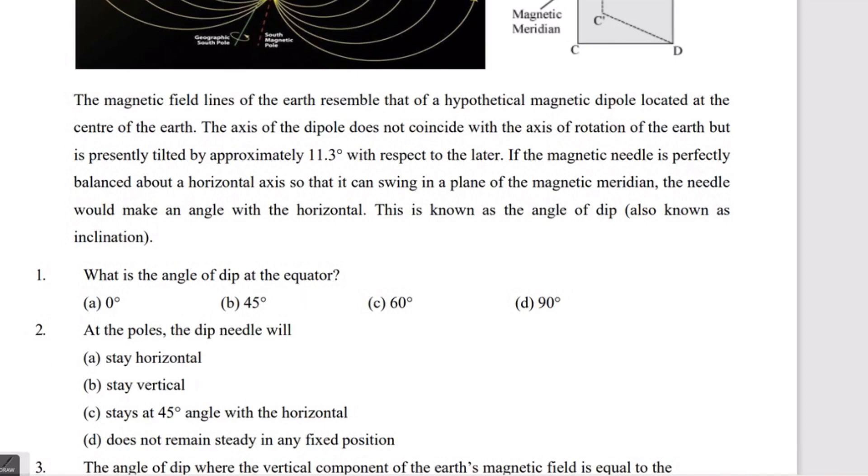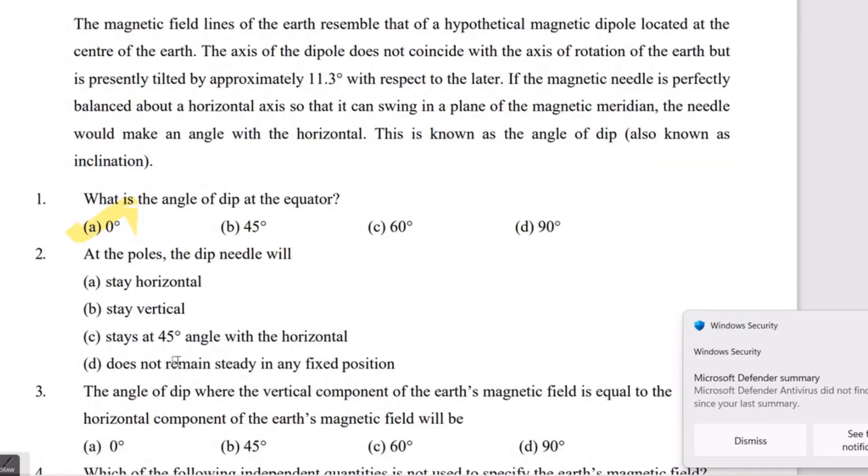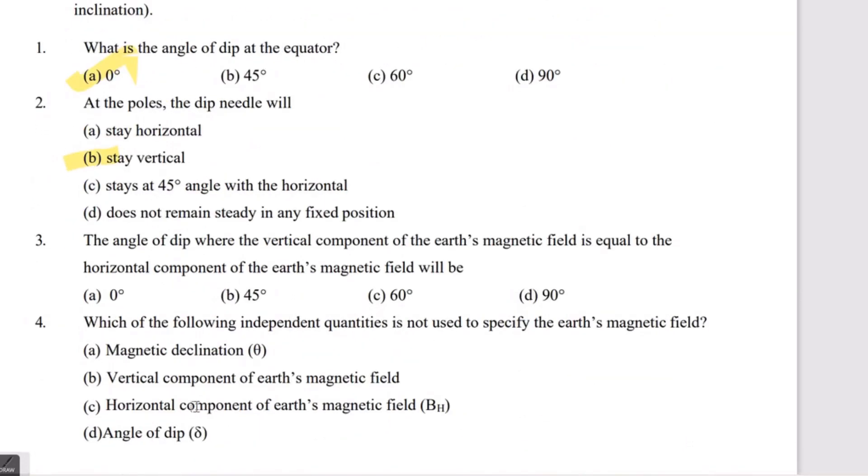Now we will discuss some of the questions. First question: What is the angle of dip at the equator? The answer is 0 degrees. Next, at the poles, the dip needle will stay vertical.